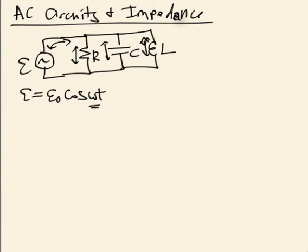We're going to use complex exponentials to do this analysis. This is really just a mathematical trick, but it's very useful and is a good shortcut to getting to the answer. What do we want to know? We want to know the current — what the current looks like flowing through each of these elements. The current we're going to worry about will have the same form as this EMF — this frequency is the frequency at which the current will oscillate in any of these elements.